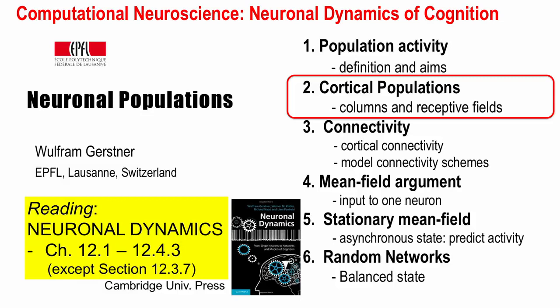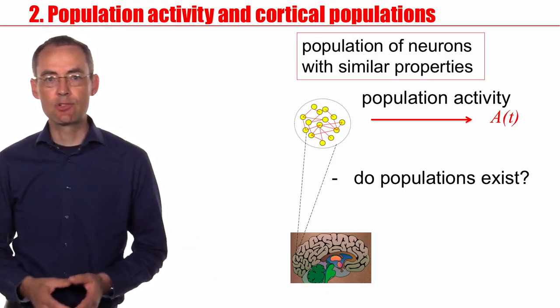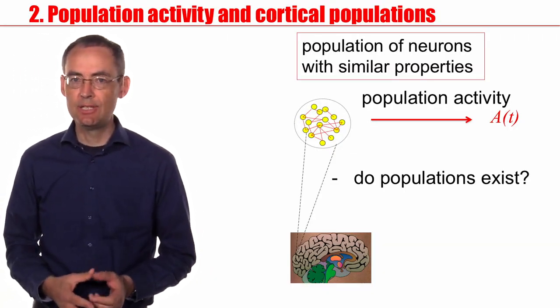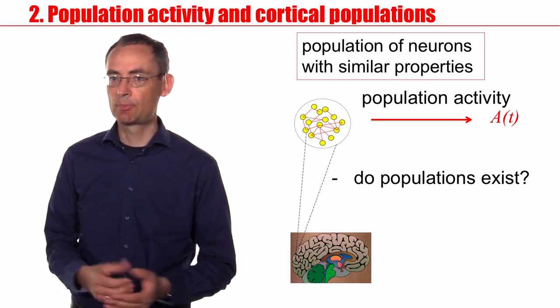Welcome back to the class Computational Neuroscience, Neuronal Dynamics of Cognition. In the previous section, we have defined population activity in a population of neurons with similar properties.